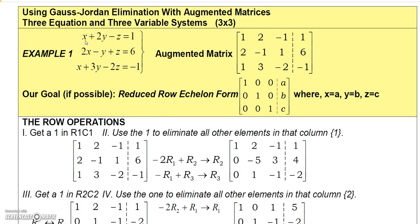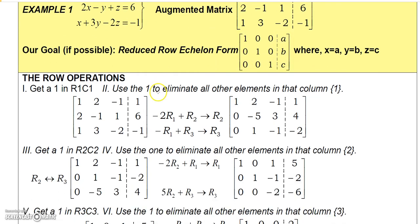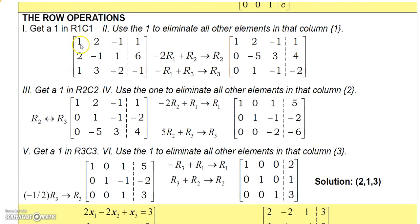Let's take that same problem and write it as an augmented matrix, then try to get it into the form with 1, 0, 0 / 0, 1, 0 / 0, 0, 1 — where the constants on the right side would be the solutions. First, I'm going to take row 1, which has a 1 in the leading position.